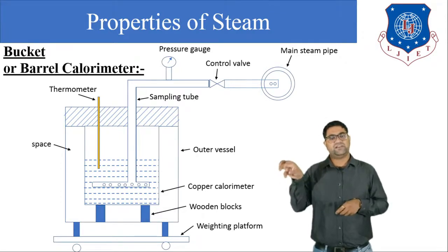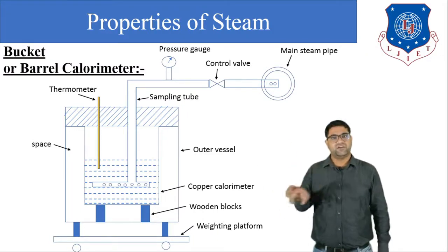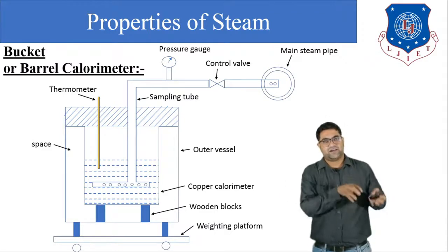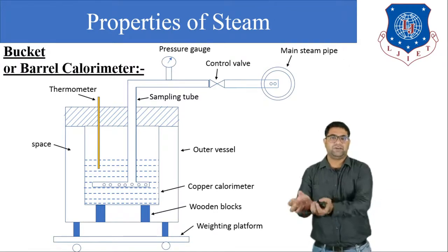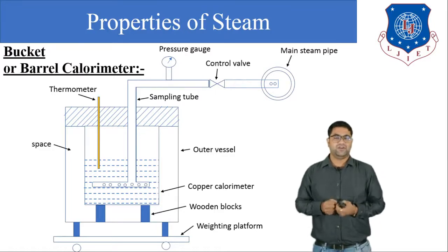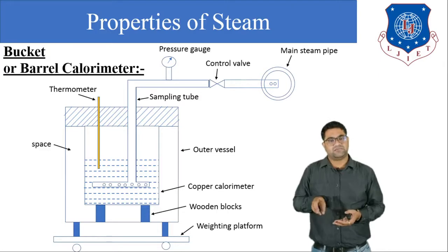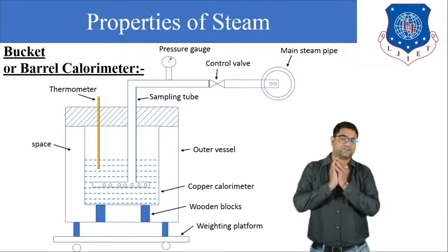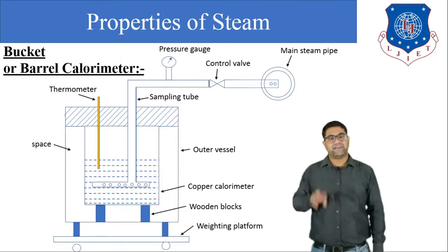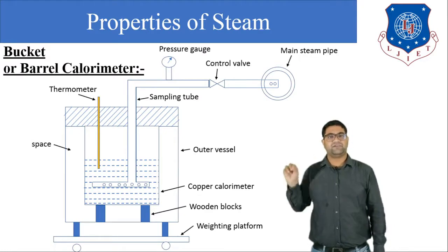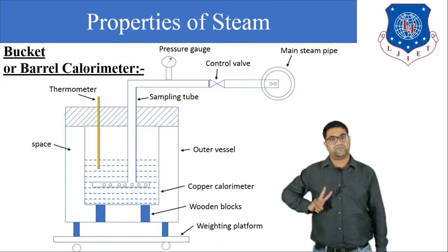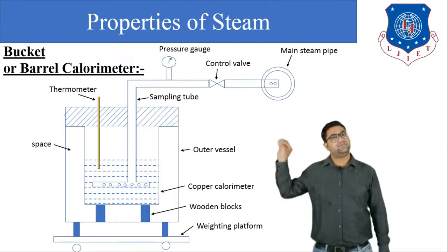The total heat — say 100 kilojoules stored in the wet steam — is supplied to the water and then to the calorimeter. Some heat is taken by the water and some by the copper calorimeter. The entire 1 kg of wet steam is condensed and converted into water. With the thermometer we measure water temperature before the steam enters and after condensation, giving us two temperature values.